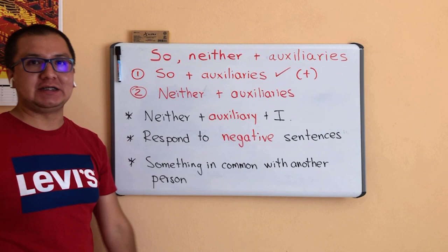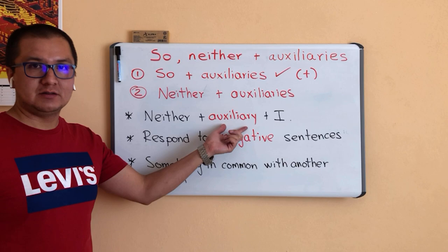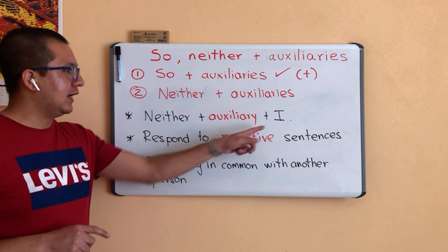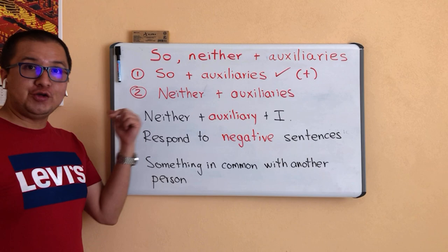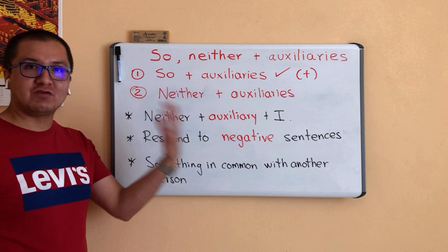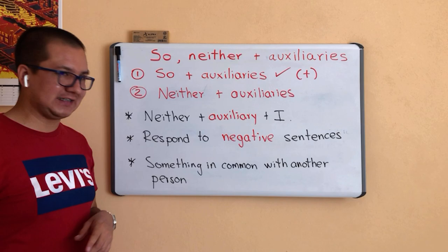Now let's continue with the word NEITHER plus Auxiliaries. The structure is: NEITHER plus an auxiliary — it can be DO, HAVE, or modal auxiliaries like CAN, SHOULD, or WILL — plus the personal pronoun I. You use this structure to respond to negative sentences. When you have a conversation and you have something in common with another person, but in negative — don't forget: negative sentences.